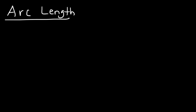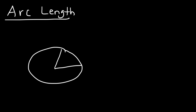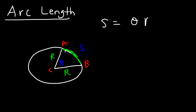Let's talk about arc length and how to find it. If we have a circle and we only want to find a portion of the arc length — let's say this portion — the length of that segment in green is known as s, the arc length, and it's based on the angle theta. C is the center of the circle, A and B are points on the edge, and the arc length s equals the angle in radians times the radius.